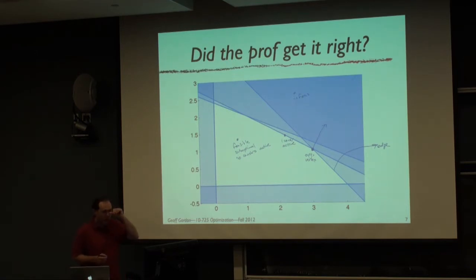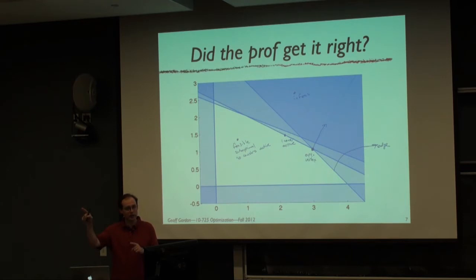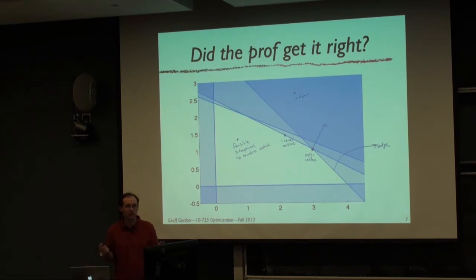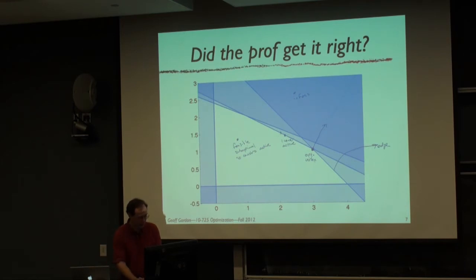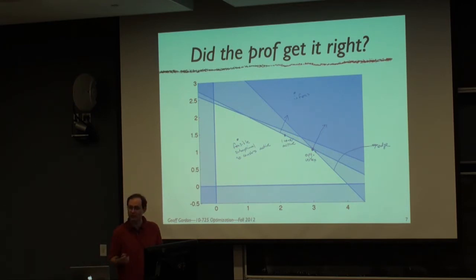Since we're trying to move in some direction as far as possible—maximizing means moving as far as possible in the direction of the objective vector, minimizing means the opposite—there's always going to be a vertex that achieves the optimal value, if the optimal value is achieved at all. There could be other optimal points too: if the objective were orthogonal to a face, every point along the face would be optimal, but there would always be optimal vertices at both ends of that face.